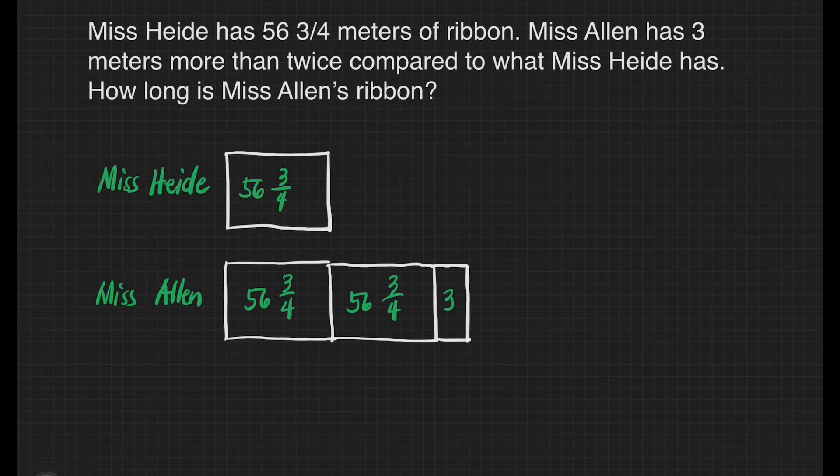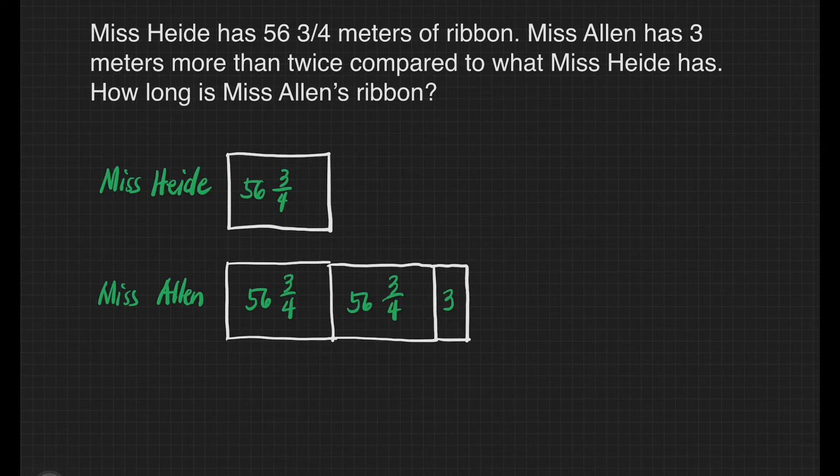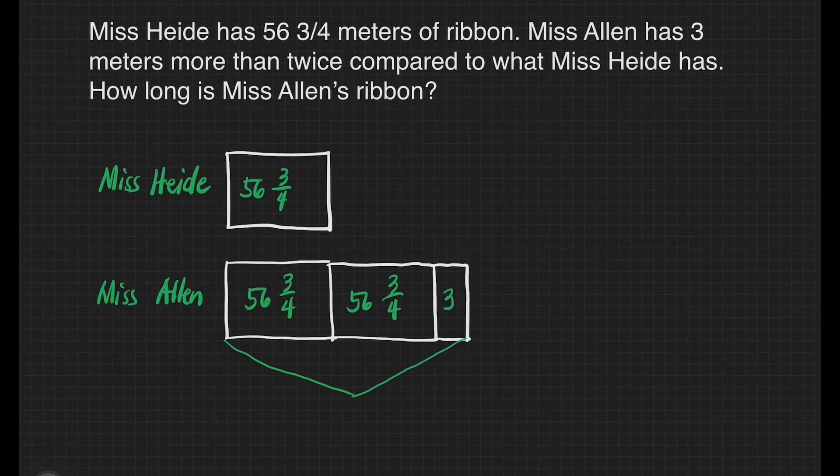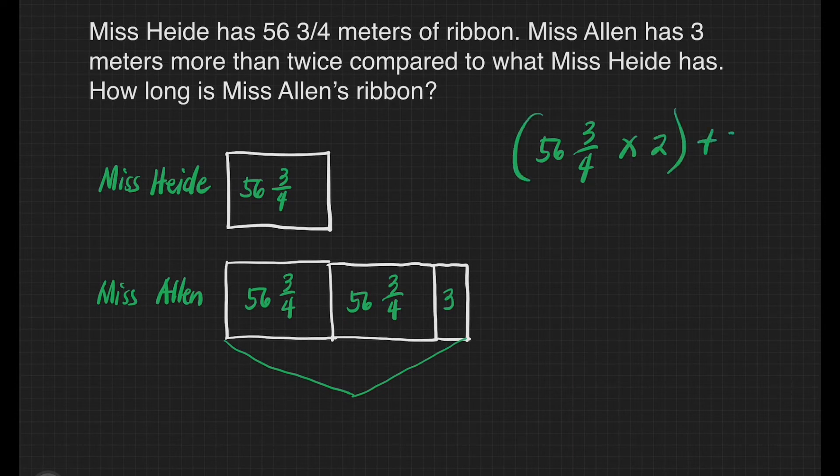So this is our block model for this problem. In order to answer the problem is to only add all what's inside in these boxes and we can already tell the answer. It's going to be 56 and 3/4 times 2, then we will add 3.